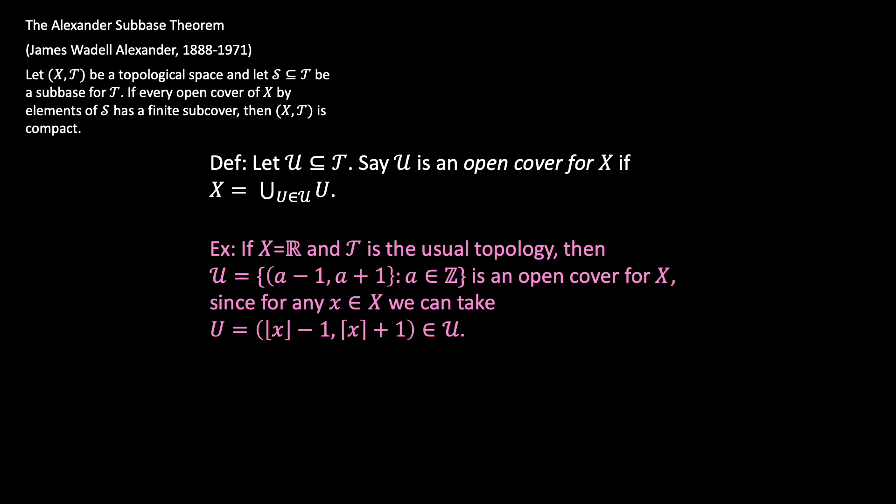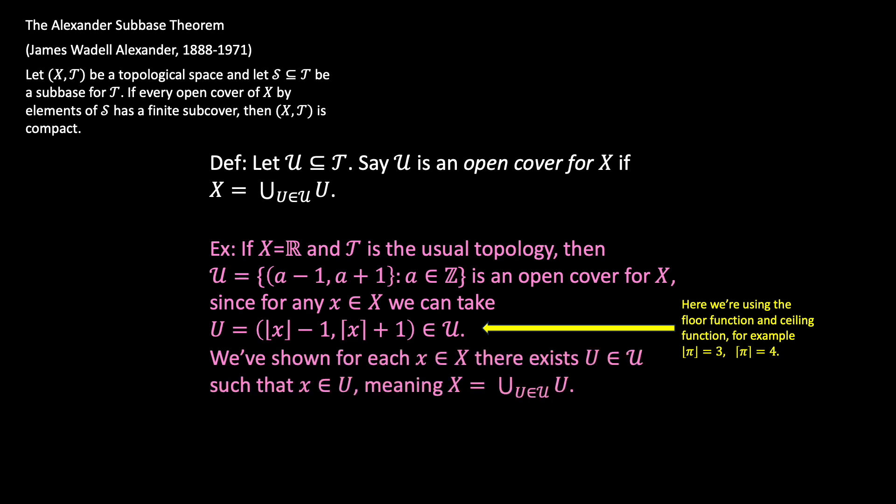That should cover the whole real line, since for any real number x we could take the interval centered at x where the left endpoint is floor(x)−1 and the right endpoint is ceil(x)+1. We're using the floor and ceiling functions here — for example, floor(π)=3 and ceil(π)=4. We've shown for each element x on the real line that there exists an element U in the cover such that x is in U, which is all you need to show that X equals the union of all these U's.